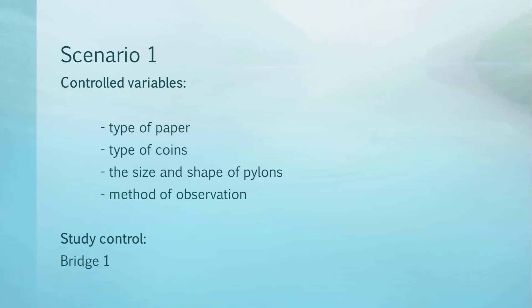The controlled variables for scenario 1 are the type of paper, the type of coins, the size and shape of pylons and the method of observation.